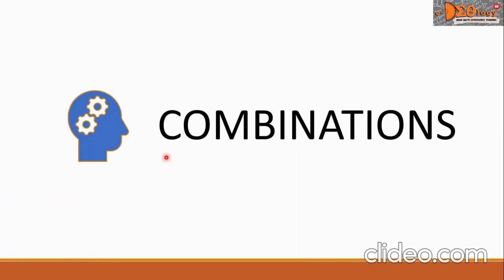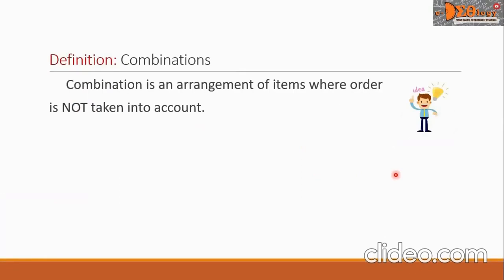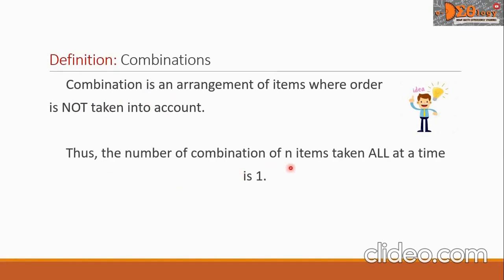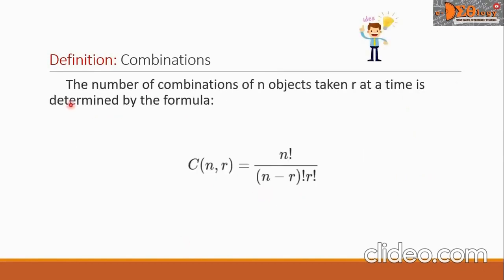Hi everyone, today we're going to study combinations. Let us define combinations. A combination is an arrangement of items where order is not taken into account. Thus, the number of combinations of n items taken all at a time is 1. The number of combinations of n objects taken r at a time is given by the formula C(n, r) equals n factorial over (n minus r) factorial times r factorial.